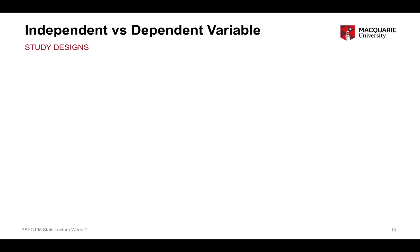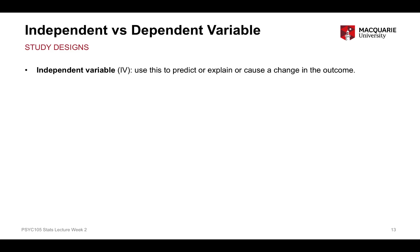The next distinction is between independent and dependent variables. In an experiment, the independent variable is the thing you're manipulating — the groups or conditions you have experimental control over. In a non-experimental design, it's the variable you use to predict another variable. The dependent variable is always the outcome. For example, looking at the effect of when students listen to lectures on final exam performance — the timing is the IV and exam performance is the DV.